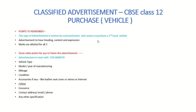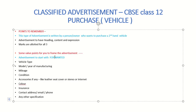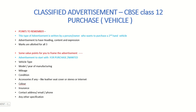For the purchase of a vehicle, the same value points apply: vehicle type, model, mileage, condition, accessories, color, and insurance. The difference is that this advertisement is written by someone who wants to buy a second-hand vehicle — new vehicles are available at showrooms and don't need an ad. This advertisement starts with 'Wanted' or 'For Purchase.'